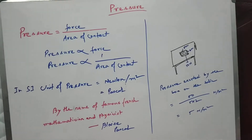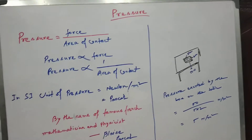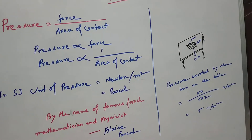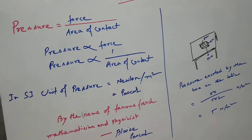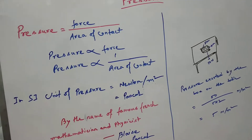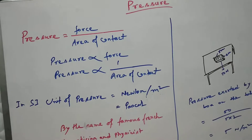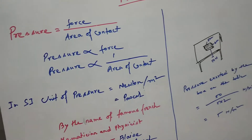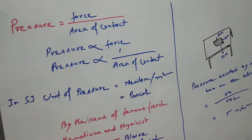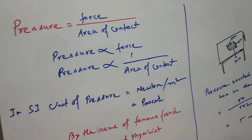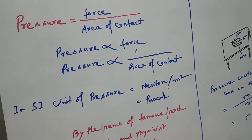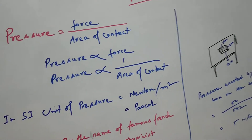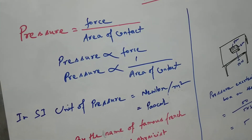Pressure is equal to force divided by area of contact. That means pressure is proportional to force, and pressure is inversely proportional to the area of contact. The more force you apply, the more pressure will be exerted. And the less the area of contact, the more pressure will be exerted. So if we have to increase the pressure applied on a particular body, we have to either increase the amount of force or decrease the area of contact.